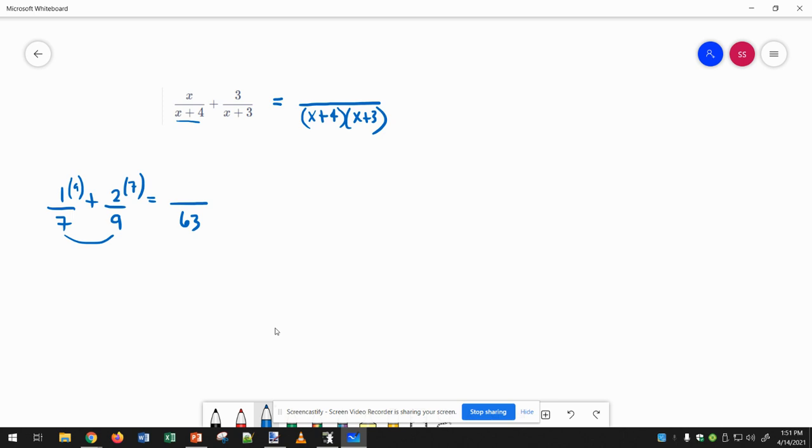x plus 4 and x plus 3 don't have any common factors, so we have to multiply them together. And now you can just leave it like that, but you have to realize now we're multiplying, kind of like cross-multiplying at this point.